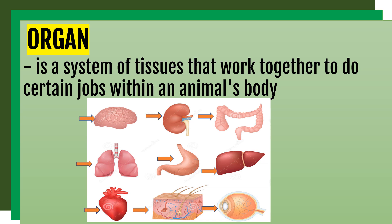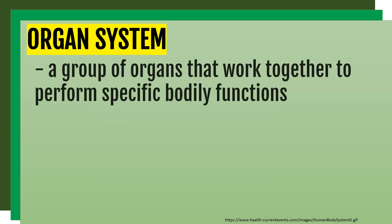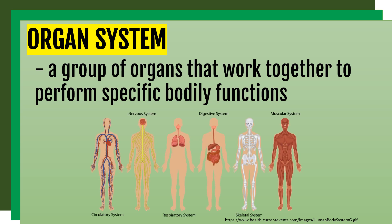Next is organ system. It is a group of organs that work together to perform a specific bodily function. The circulatory system is responsible for blood circulation. The nervous system acts as the control center of the body. The respiratory system is responsible for breathing. The digestive system handles digestion, absorption of nutrients, and excretion. The skeletal system supports the body and protects internal organs. The muscular system allows movement.